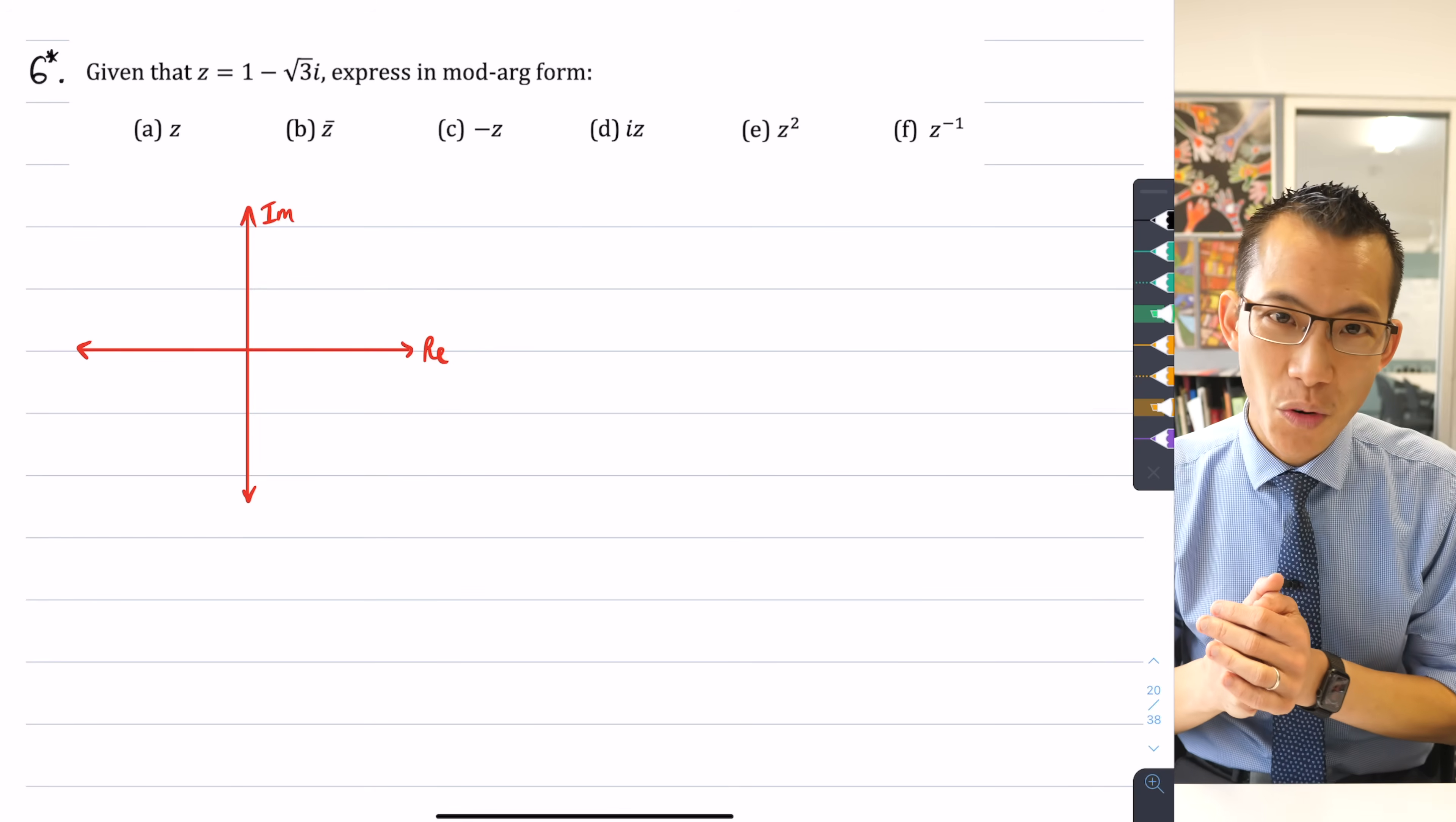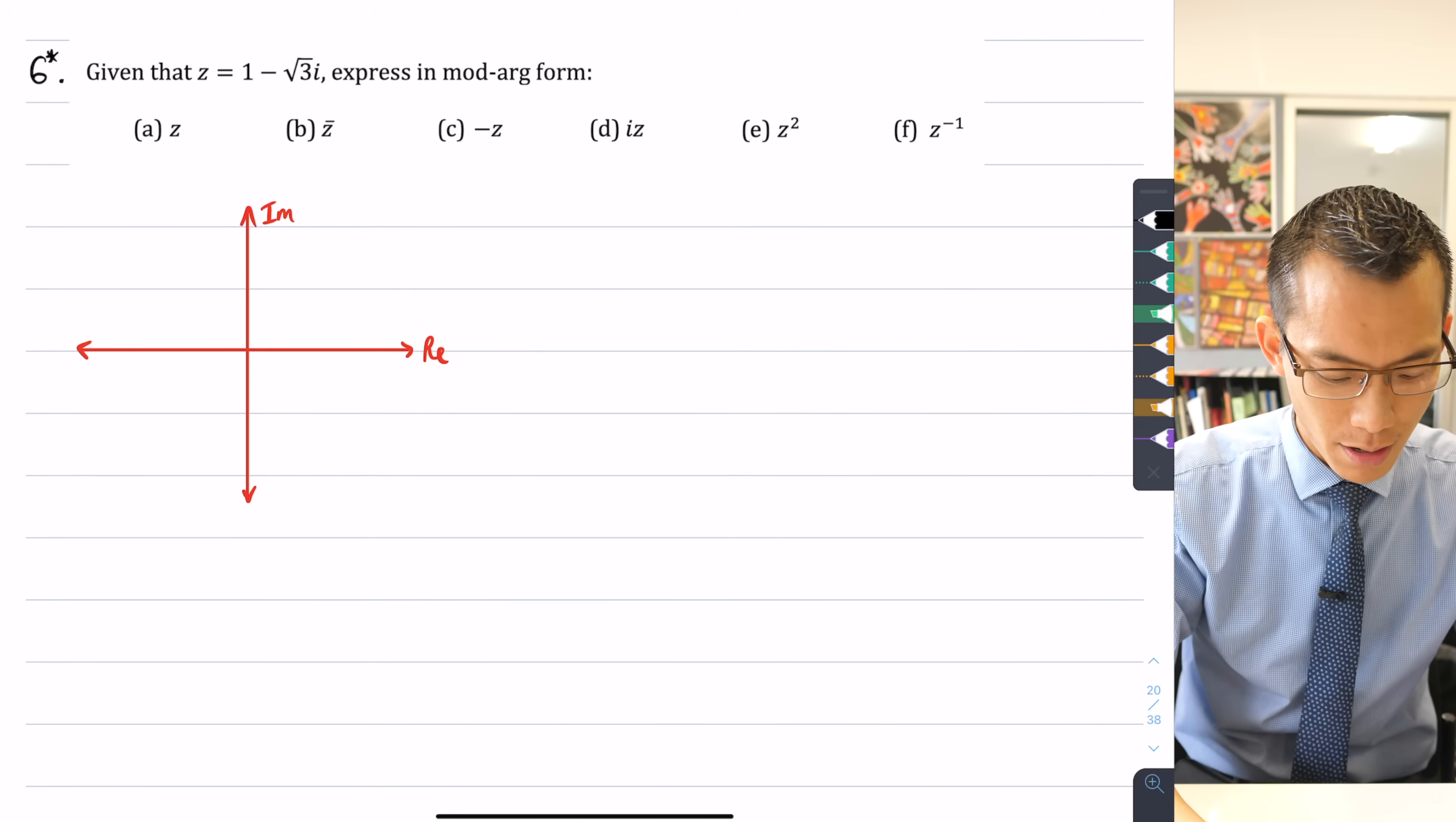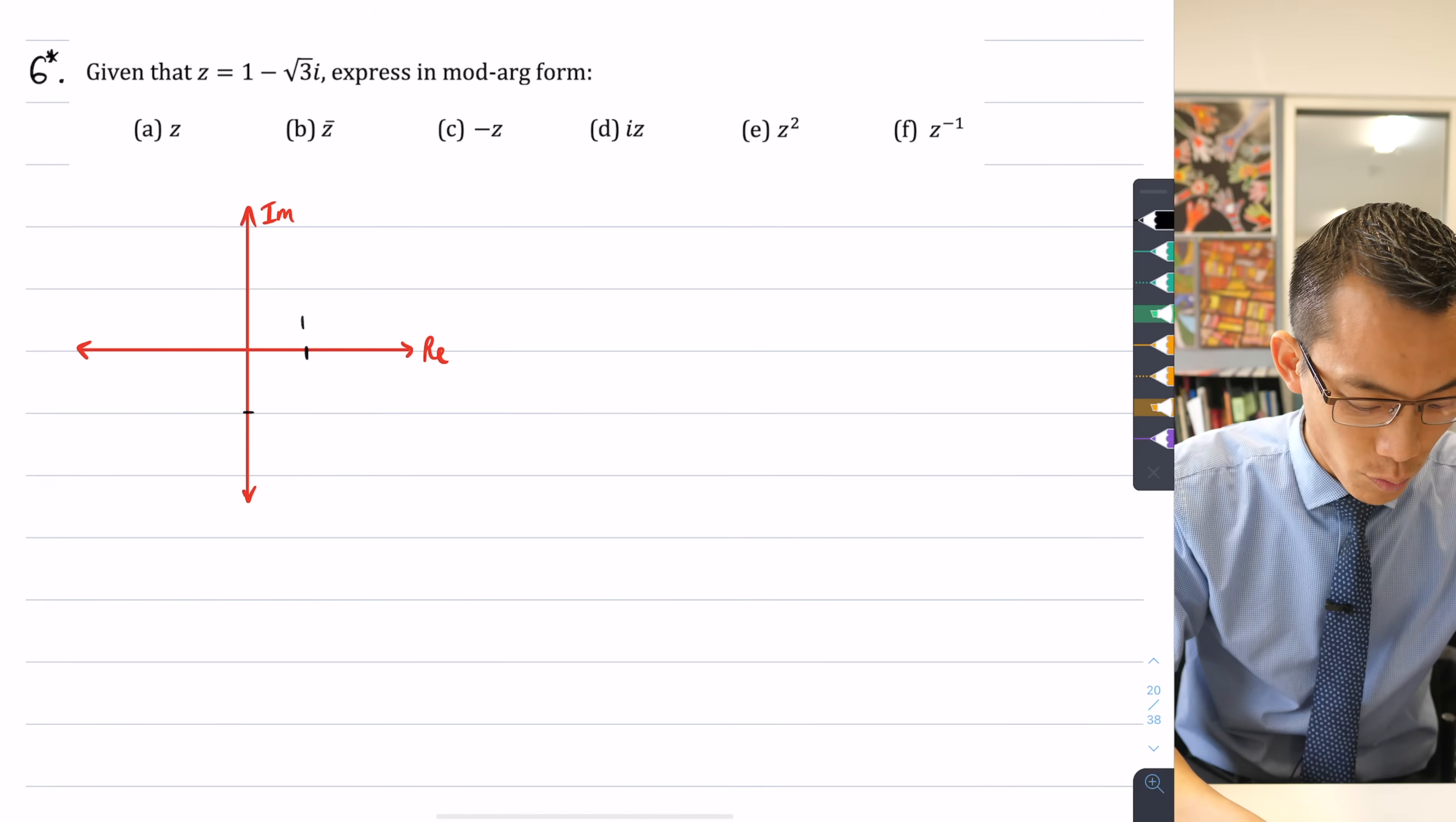So 1 - √3i, where is that roughly? Well, if I start to put on some scale here, let's say if one's about here, I'm going to call it, that would make negative one here, negative two here.